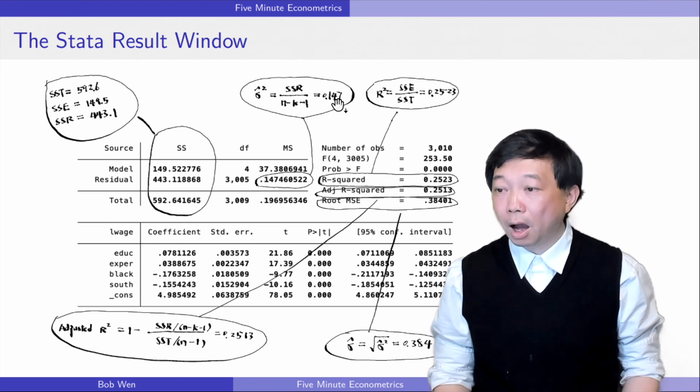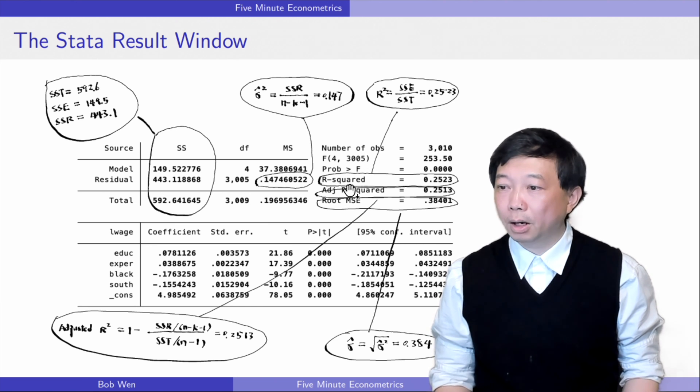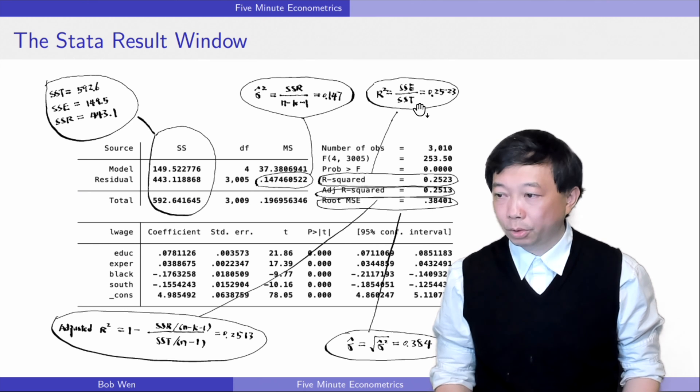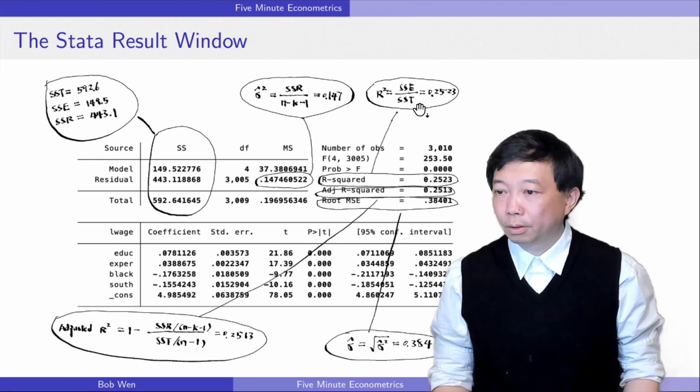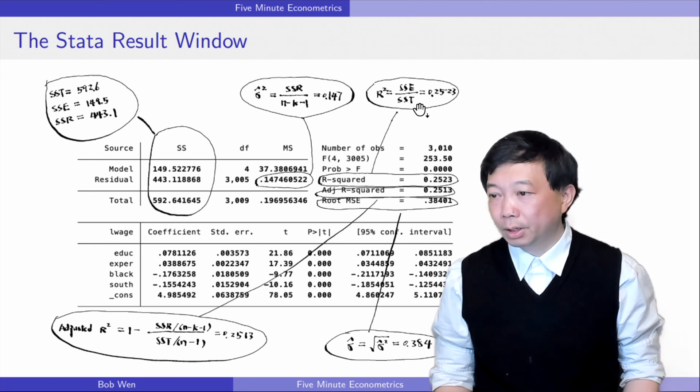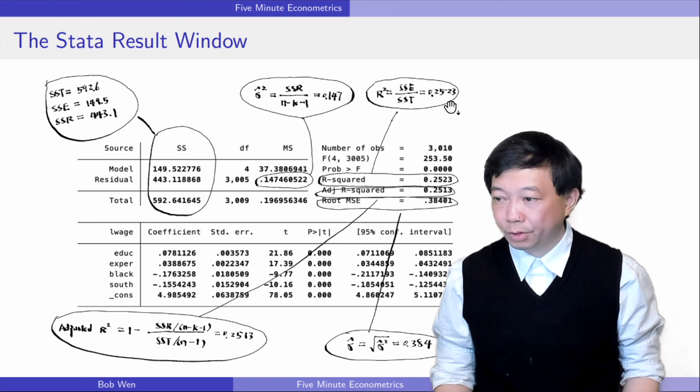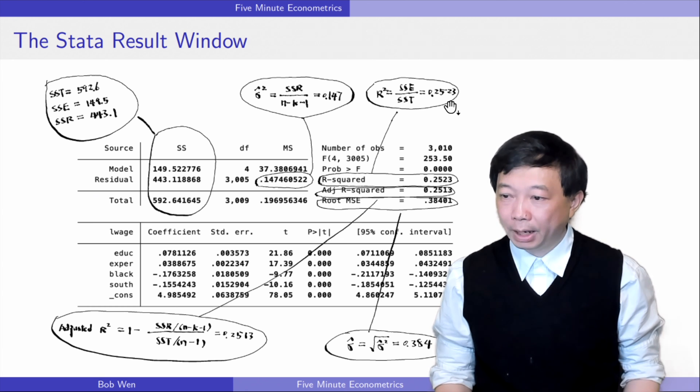We can find the R squared and the adjusted R squared in the upper right section. R squared is defined as the ratio of the explained variation to the total variation. We interpret it as the fraction of the sample variation in the outcome variable y that is explained by the explanatory variable x.